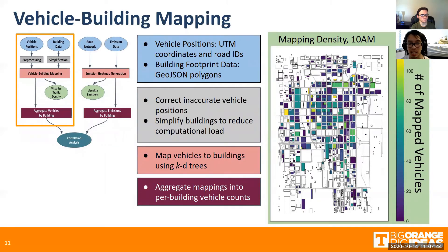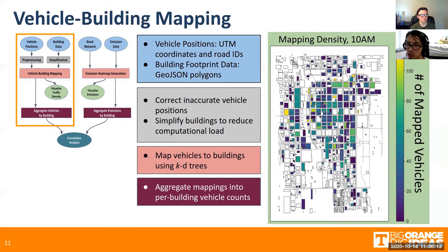Looking at this half of our workflow, we move from initial data in blue through the preprocessing and simplification steps in gray, then to a vehicle-to-building mapping stage in pink. Finally, we aggregate these mappings by building to get a per-building metric of traffic density, which can be plotted into a map as seen on the right, where we can already see traffic hotspots shown by the yellow and light green rectangles.